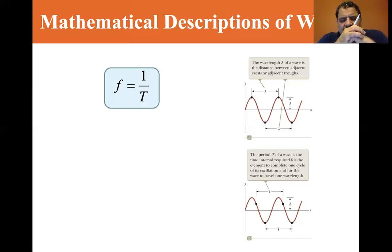So frequency is cycles per second. Period is seconds per cycle. Now we don't call frequency cycles per second. We have a name for it called Hertz, but it is by definition how many cycles per second.